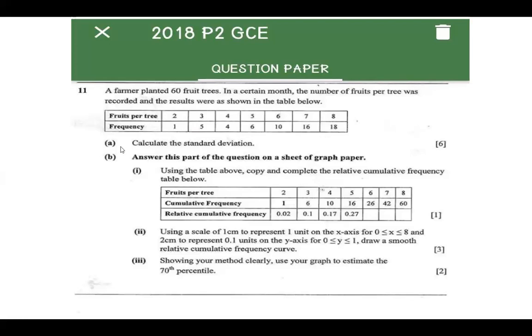The requirement in part A is that you have to calculate the standard deviation, and this is six marks. To calculate the standard deviation, we need to recall the formula, which is shown on the screen. Standard deviation σ is equal to the square root of (summation of f times x squared over summation of f) minus x bar squared.